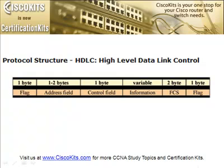Let's examine the protocol structure of HDLC by looking at each field and what it conveys. The first field is the flag, which is always set to 0x7E — a hexadecimal value. Next is the address field, which defines the address of the secondary station sending the frame, or the destination of the frame sent by the primary station. It contains a service access point, a command response bit, and an address extension bit, which is usually set to true to indicate a one-byte address. If set to false, this indicates additional bytes follow to represent the address — this is the extended address.